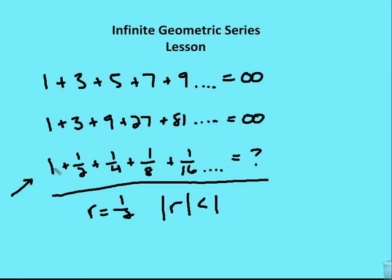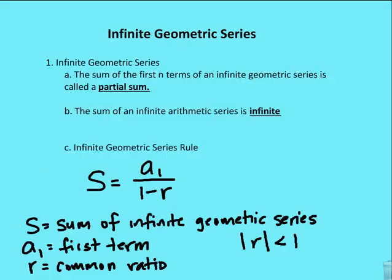So in this case, a partial sum of this geometric series would be 1, 1 half, plus 1 fourth, plus 1 eighth, plus 1 sixteenth, and we can stop it right there. We can also say the partial sum of this geometric series is 1 plus 3, plus 9, plus 27, plus 81, and stop it there. So a partial sum is just part of a sum of an infinite geometric series, not the entire sum.